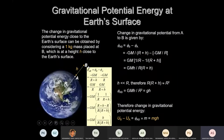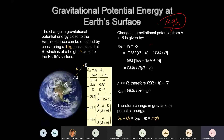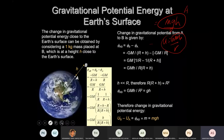Now I need to talk about this slide. This slide tells how MGH — which you used in O-level and AS level — links to the potential energy we've just calculated. The new potential energy is –GMm/r. How does this link to MGH?